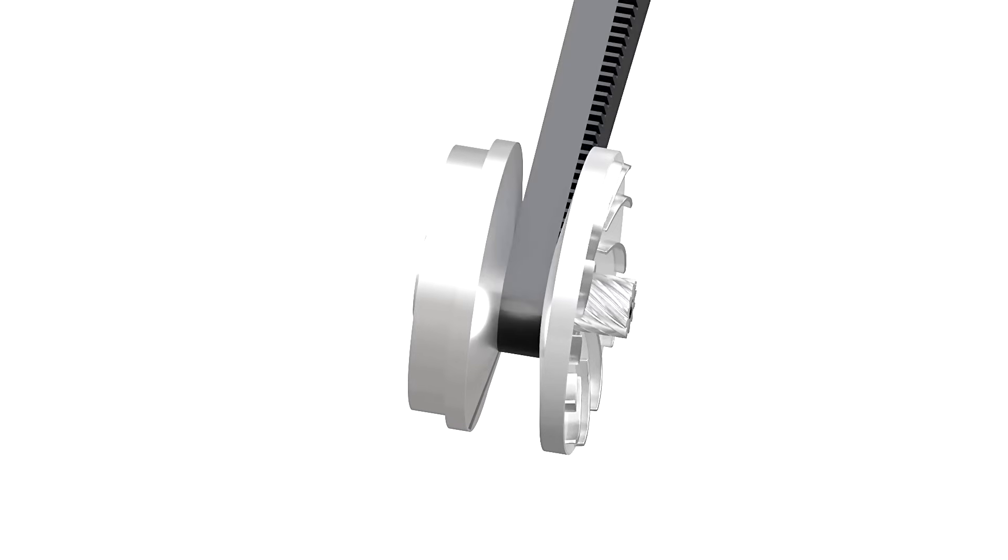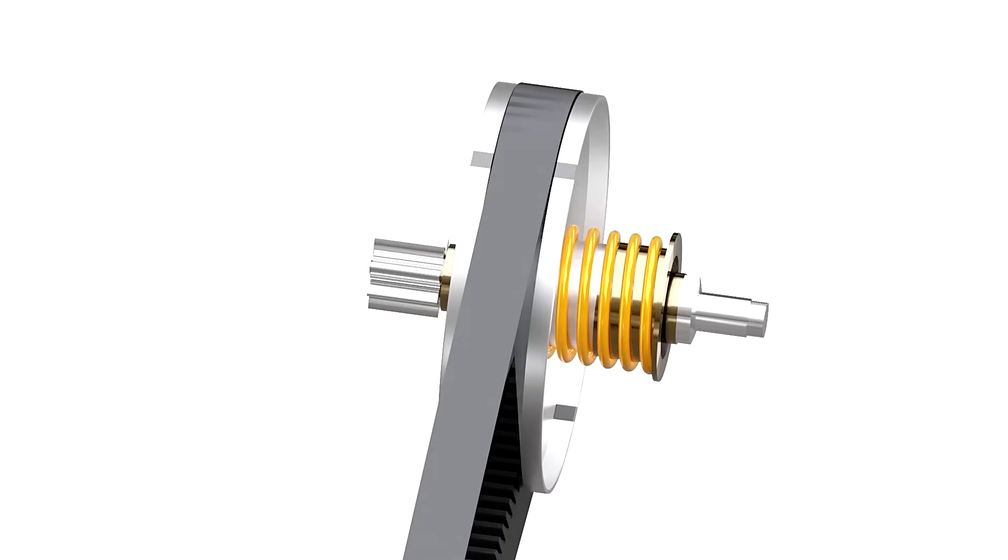Normally, in CVTs, this is done physically using springs and weights. So the ratio changes depending on preset torque and speed values. But in our system, we can determine the gear ratio entirely ourselves, which means we can always keep it at the most optimal ratio.